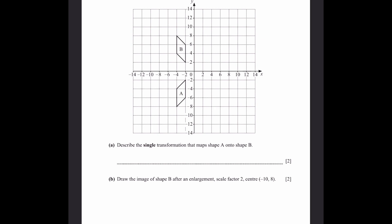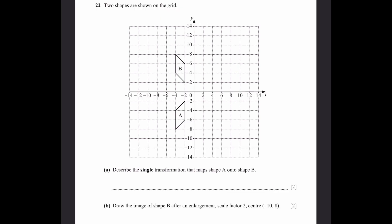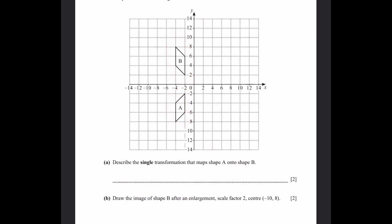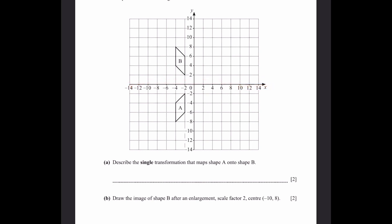Question 22. Two shapes are shown on the grid. Part a: describe the single transformation that maps shape A onto shape B. Looking at the diagonal orientations — one slopes one way, the other the opposite — it is a reflection. The midpoint between corresponding points lies on the line y = 0, so it is a reflection along the line y = 0.